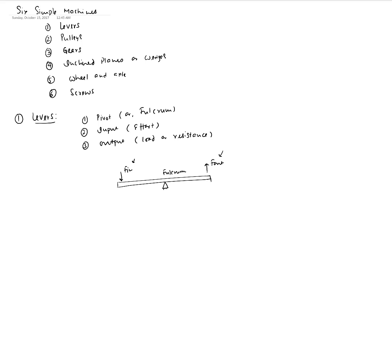The basic idea with a lever is to either apply a small amount of effort to gain on the output force or load, or to gain on the motion. The work done always has to be the same, assuming 100% efficiency in the system - you will either gain on the forces or on the motion, but not simultaneously on both.